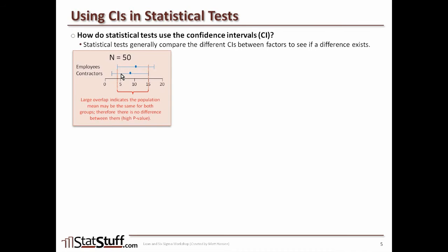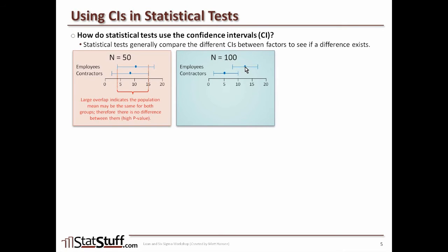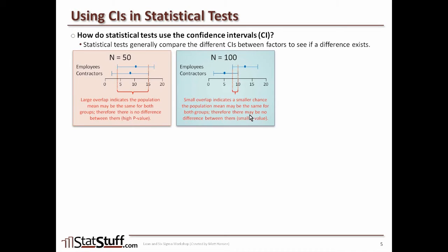But what if you collected more data and doubled your data size? Now for employees, the average shifts a little bit and there's still a confidence interval on either side, same with contractors. The test again looks at the overlap. Now that there's much less overlap, the chance that both groups fall within this smaller overlapped region is much smaller. Because of that smaller chance, that's going to represent as a smaller p-value — chances are it will be small enough to say that there probably is a difference between these groups.